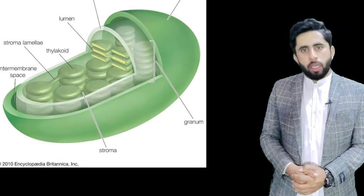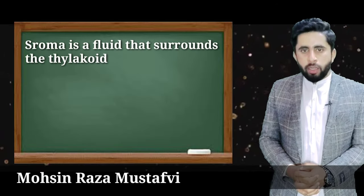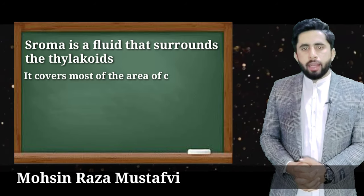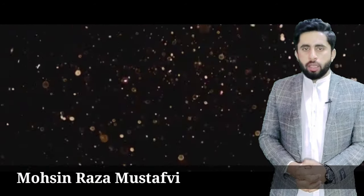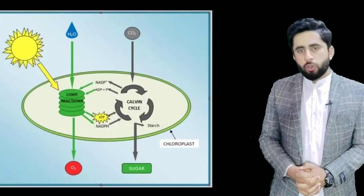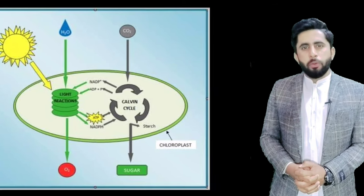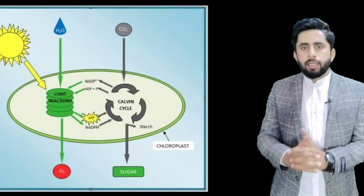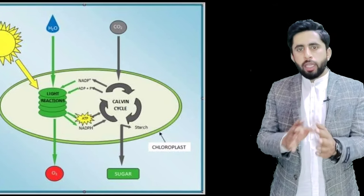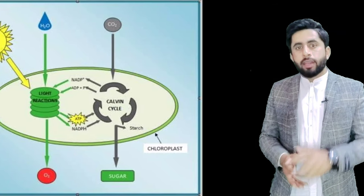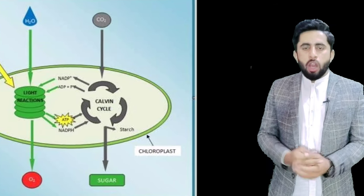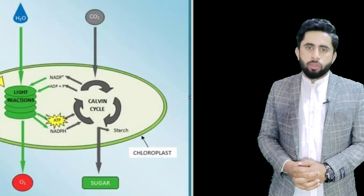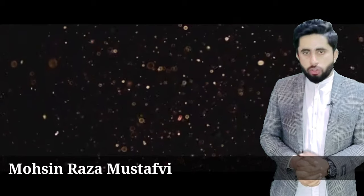Chloroplast کا تیسرا حصہ stroma ہے، یہ بہت important حصہ ہے۔ Stroma is a fluid that surrounds the thylakoid; it covers most of the area of chloroplast۔ Stroma کے اندر بہت سے important enzymes موجود ہوتے ہیں۔ Stroma وہ جگہ ہے جہاں CO2 fix ہوتی ہے یعنی CO2 کے اندر موجود inorganic carbon کو organic carbon میں convert کرنا۔ یہ dark reaction یعنی Calvin cycle میں ہوتا ہے اور یہ stroma کے اندر ہوتا ہے۔